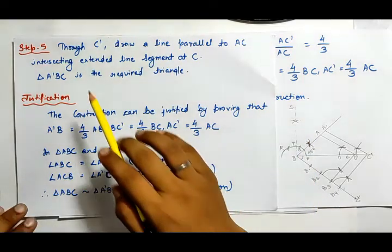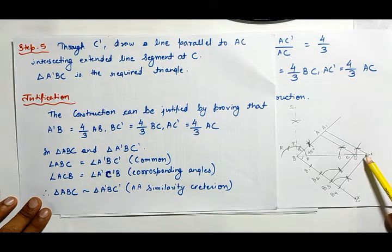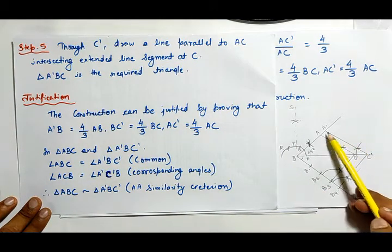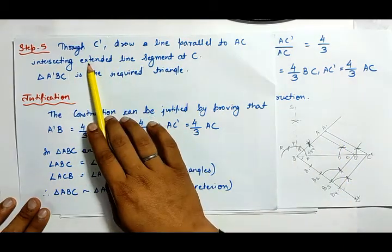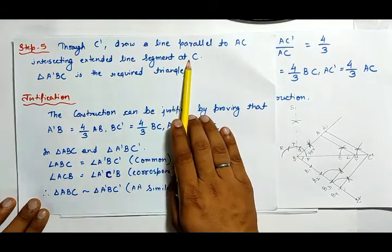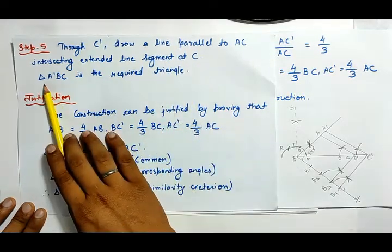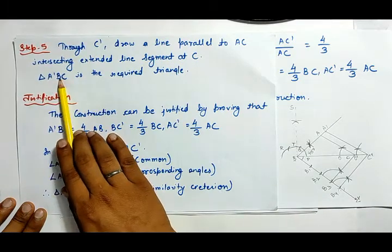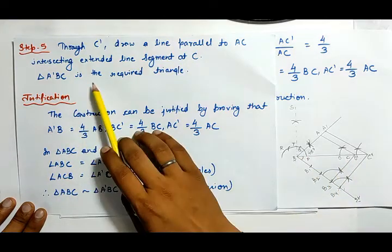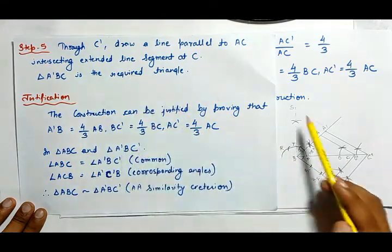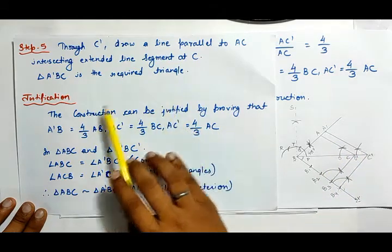Step 5: through C dash, draw a line parallel to AC intersecting the extended line segment at A dash. Triangle A dash BC dash is the required triangle.